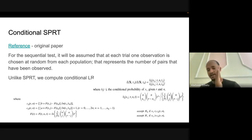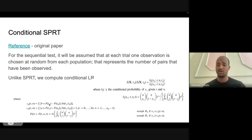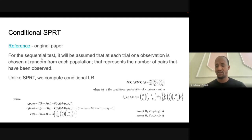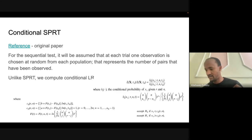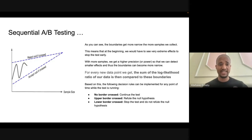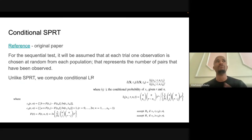We are keeping the historical data relationship in the current data points we are getting. While the data is coming, we do the test again and again. One question that may come to mind is: what makes it different if we just keep sampling? If the log-likelihood ratio always lies between the two boundaries, when do we stop the experiment?